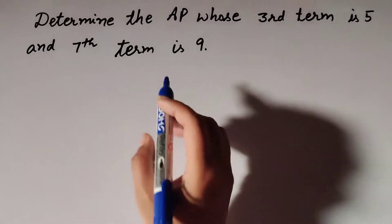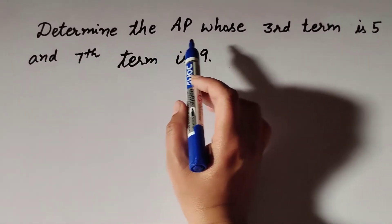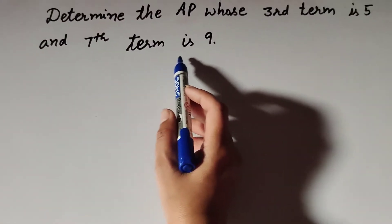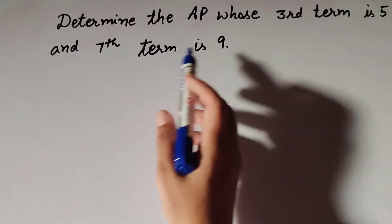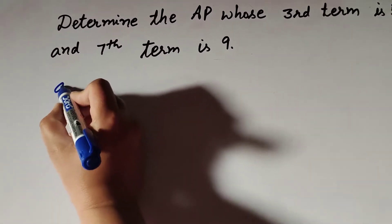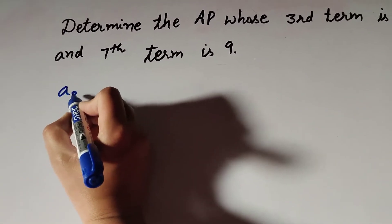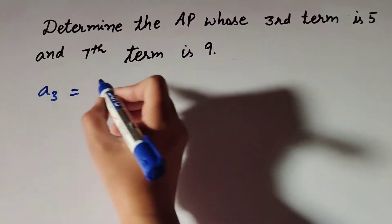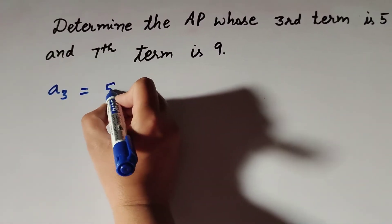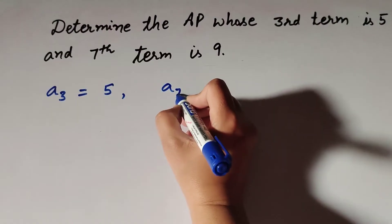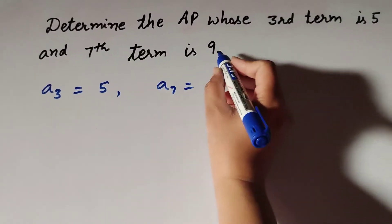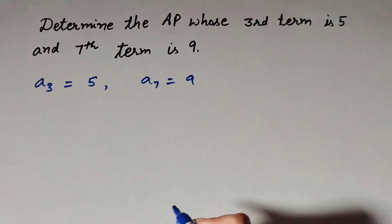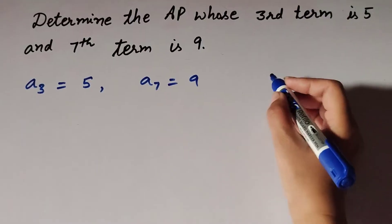Hello friends, welcome to my channel. In this video we discuss: determine the AP whose 3rd term is 5 and 7th term is 9. So in this question, the given information is 3rd term a3 is equal to 5, and 7th term a7 is equal to 9. So we make an AP series.